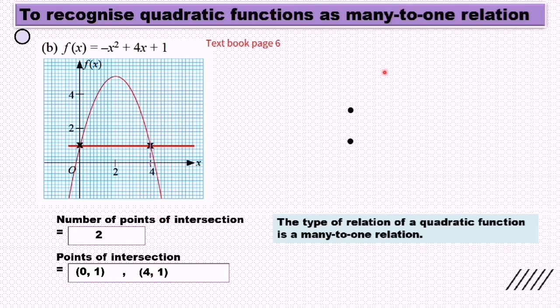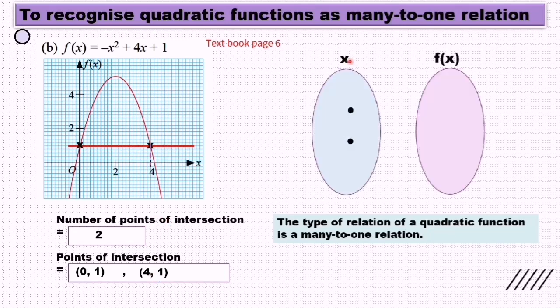If I draw it into a function diagram, we have 0 and 4 mapping to 1 only. So draw the arrows. The type of relation of a quadratic function is a many-to-one relation.